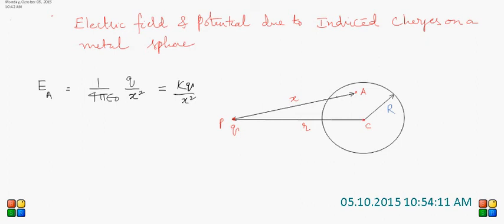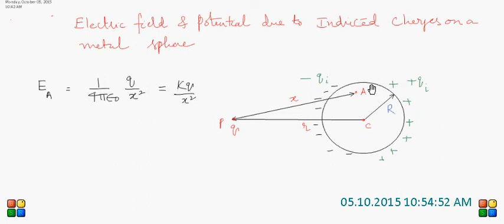Due to the presence of charge Q, as this is a conductor, charges are induced. On the nearer side, negative charge is induced; on the farther side, positive charges are induced — this is +Q induced and −Q induced. The induction phenomenon will continue until the electric field intensity at any point on the surface of the conducting shell becomes zero.